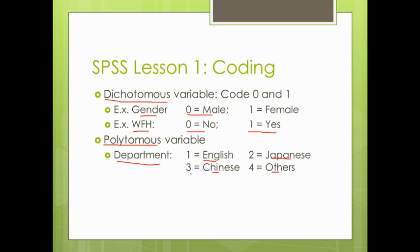three for the third option, and four for the last option. So we have learned how to code dichotomous variables and polytomous variables.